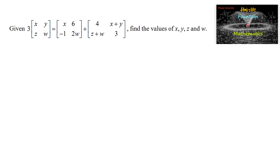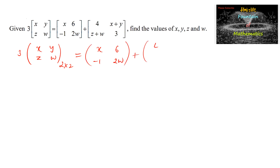Given: 3 times the matrix [x, y; z, w] is equal to [x, 6; -1, 2w+4] plus [x+y, z+w; ?, 3]. These are all 2 by 2 matrices, so we can just add them and equate the corresponding elements.